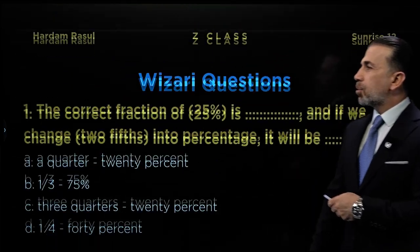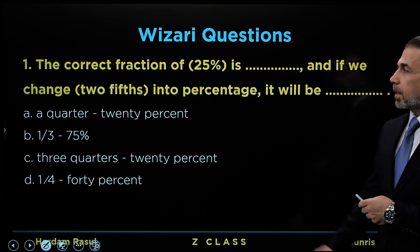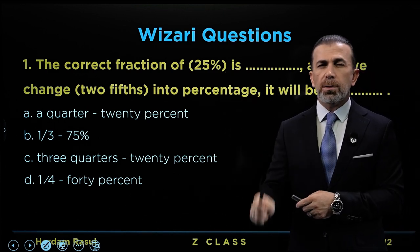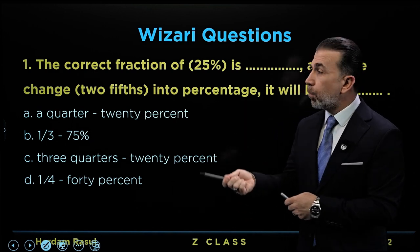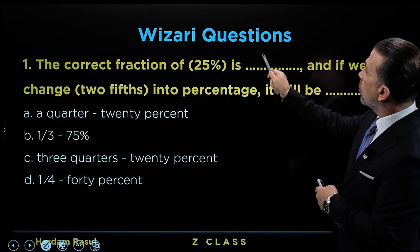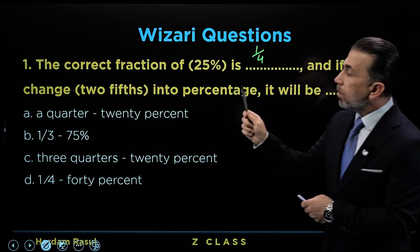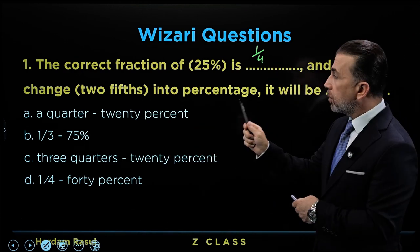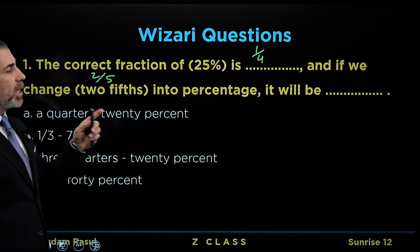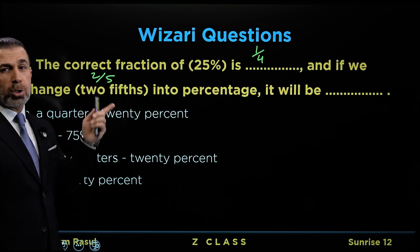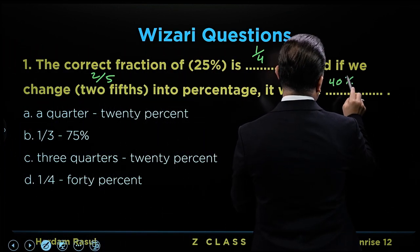The correct fraction of 25% is 1 over 4. And if we change two fifths — two fifths is 40%.